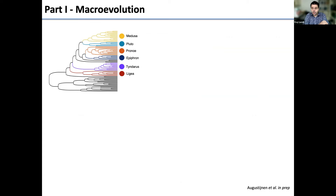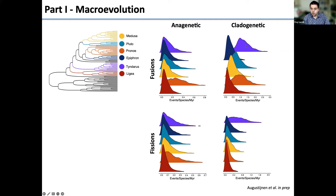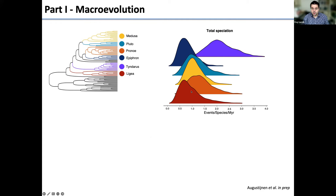Looking within Aricia across different groups, we split the phylogeny into six groups for which we had the most karyological information and ran ChromoSSC separately for each. The Tindarus group — the youngest and most karyologically diverse — shows much higher speciation rates, and total speciation is much higher within Tindarus than in groups with very little chromosomal rearrangement. Overall, we find differences in cladogenetic changes within the genus.